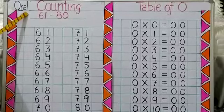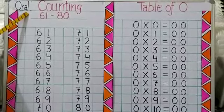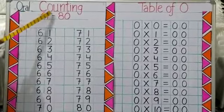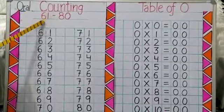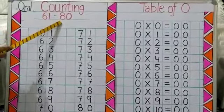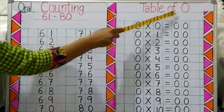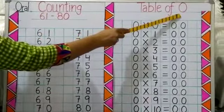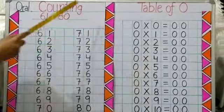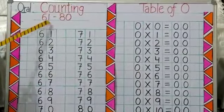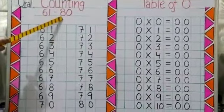Hello kids! Today we will revise oral counting 61 to 80 and table of 0. So let's start with counting 61 to 80.